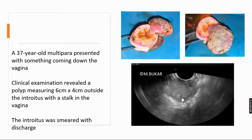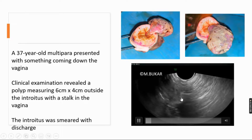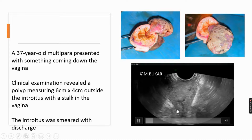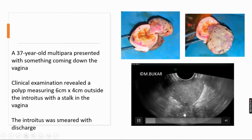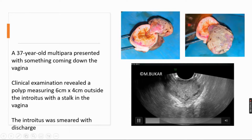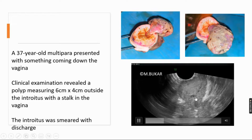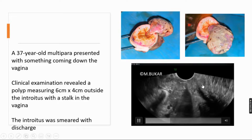This is the ultrasound image of the polyp. You can see the heterogeneous lesion here with the stalk going into the vagina and cervix as seen here. Note this vascular flow literally hugging the polyp.